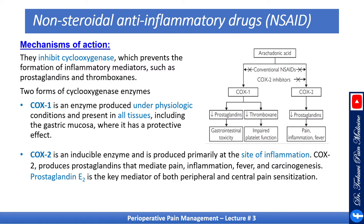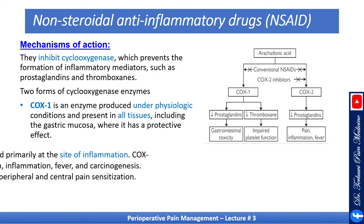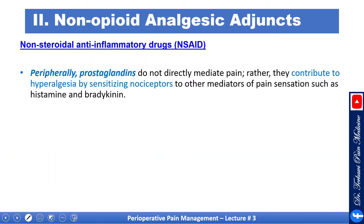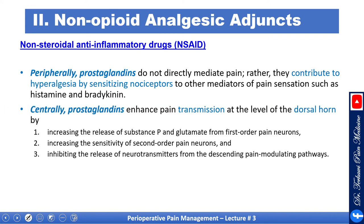Prostaglandin E2 is the key mediator for both peripheral and central sensitization. Peripherally, prostaglandins do not directly mediate pain; rather, they contribute to hyperalgesia by sensitizing receptors to other mediators of pain sensation such as histamine and bradykinin. Centrally, prostaglandins enhance pain transmission at the level of the dorsal horn by increasing the release of substance P and glutamate from first-order pain neurons, increasing the sensitivity of second-order pain neurons, and inhibiting the release of neurotransmitters from the descending pain modulating pathway.